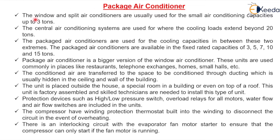Packaged air conditioner. Window AC and split AC are usually used for small air conditioning capacity up to 3 tons. Central air conditioning systems are used where the cooling load extends beyond 20 tons. The packaged air conditioning systems are used for cooling capacity in between these two — that means 3 to 20 TR.